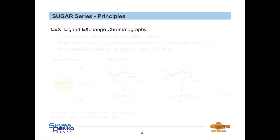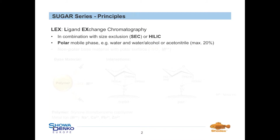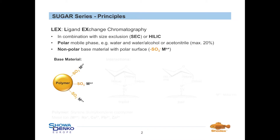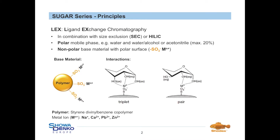Ligand exchange chromatography can either be combined with size exclusion or HILIC chromatography. In general, a polar mobile phase, for example water and water-alcohol or acetonitrile mixtures, is used. In the case of Shodex ligand exchange columns, non-polar particles based on styrene divinylbenzene copolymer modified with highly polar sulfonate groups with a corresponding counter metal cation are applied. This counter ion can be sodium, calcium, lead, or zinc. The most important interactions between analytes and stationary phase leading to a separation are shown on the right side.